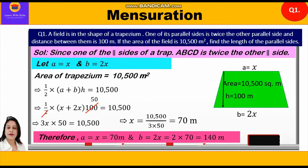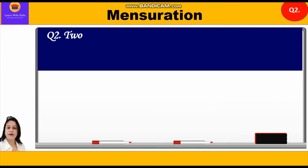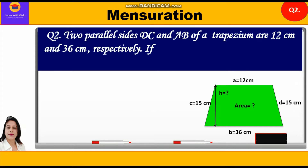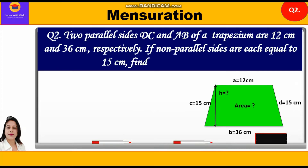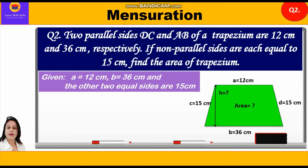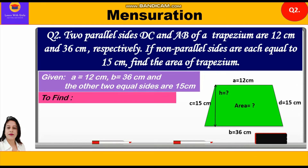Now let us start question number 2. Two parallel sides DC and AB of a trapezium are 12 cm and 36 cm respectively. The non-parallel sides are each equal to 15 cm. Find the area of the trapezium. So given: the two parallel sides A = 12 cm and B = 36 cm, and the two equal non-parallel sides are 15 cm each. We have to find the area.